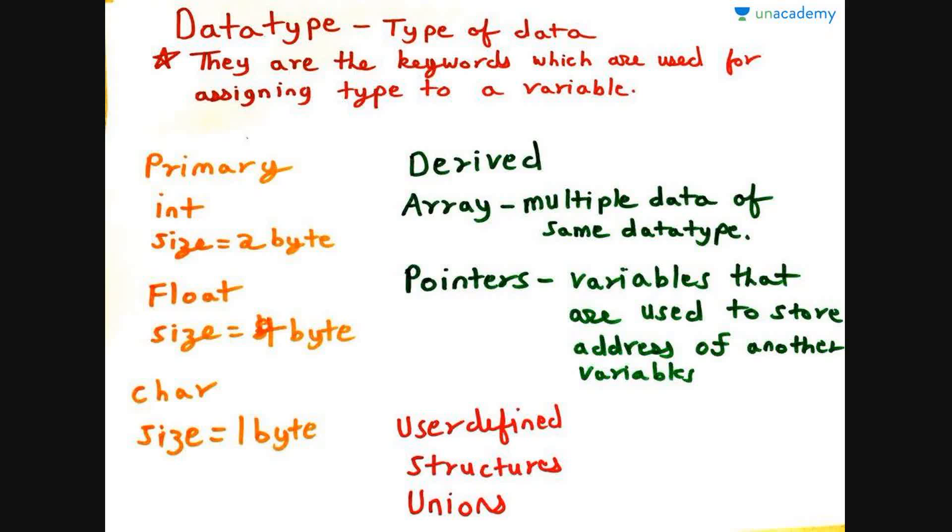Now we move to derived data types, which are derived from primary data types. They consist of arrays and pointers. Arrays are a collection of multiple data of the same data type. For example, a group of characters, also known as a string, or a group of integers. Pointers are variables that are used to store the address of another variable. They point towards the address, just as the name suggests.